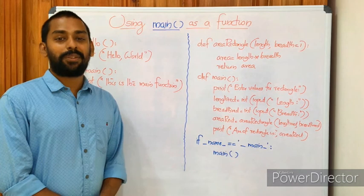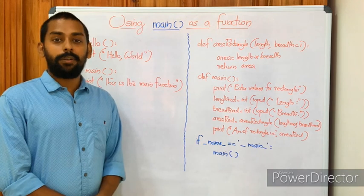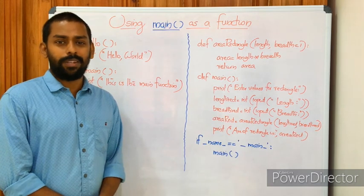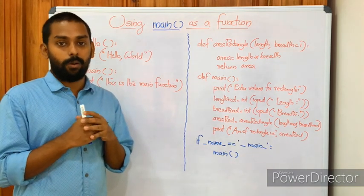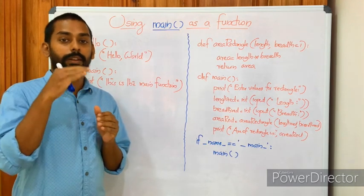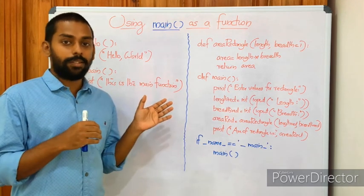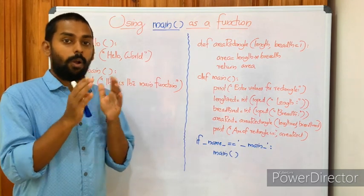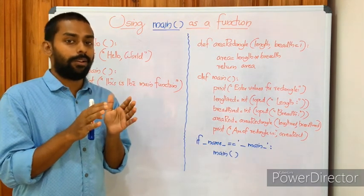Welcome back to computer science class. In your previous session we covered scope of variables. Variables may not be available everywhere in a program — it depends on scope, meaning the accessible area. There are two scopes: global scope and local scope. Global variables are defined at the top of the module or using the global keyword, while local variables are declared inside a function or loop. Local scope is very limited, but global variables are accessible from anywhere in the program.